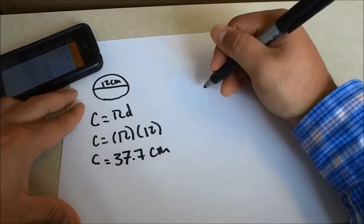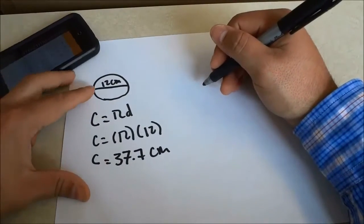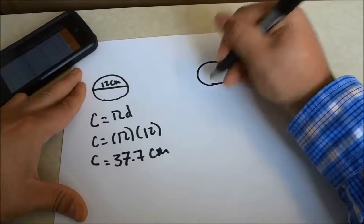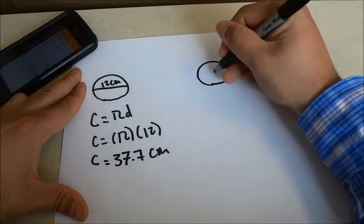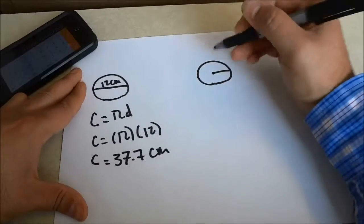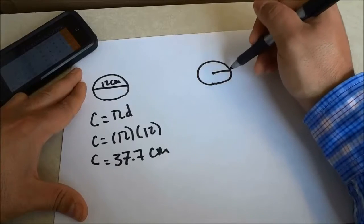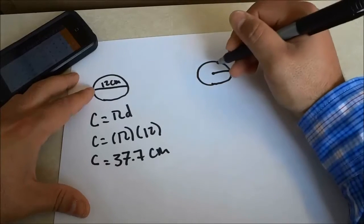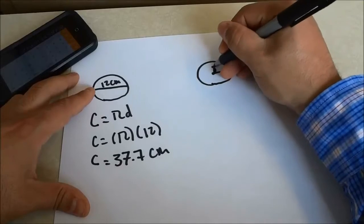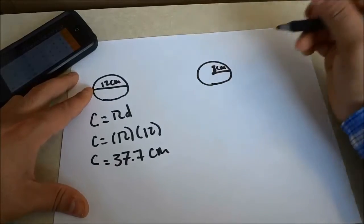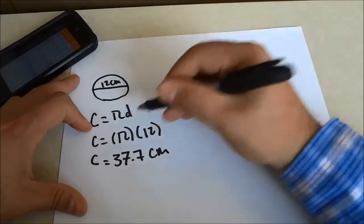Now I'm going to show you another example that uses the radius instead. Let's imagine that we have a circle just like that and the radius, which is the distance from the center point of the circle to the edge of the circle, is 8 centimeters. So now we have the radius instead of the diameter.